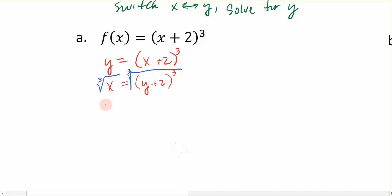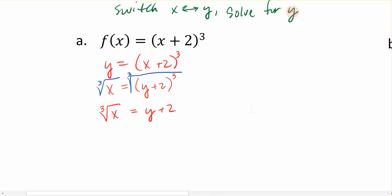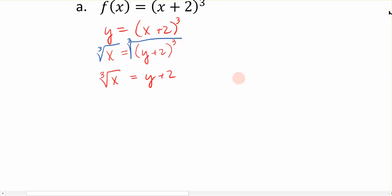So if I take the cubed root of both sides, I have the cubed root of x is now equal to y plus 2, and y is out of the parentheses. So that's a good thing. Again, we're trying to solve for y and get y by itself. So from here, I'm just going to subtract 2 to the left-hand side, and I get the cubed root of x minus 2 equals y.